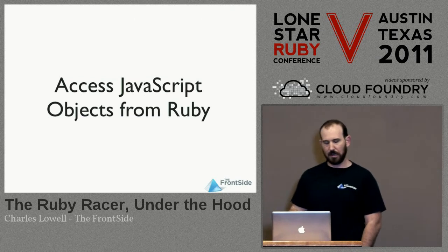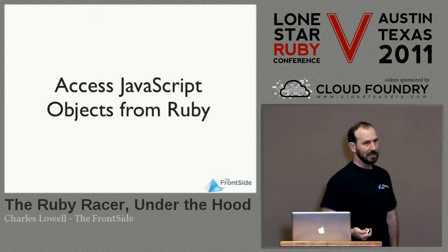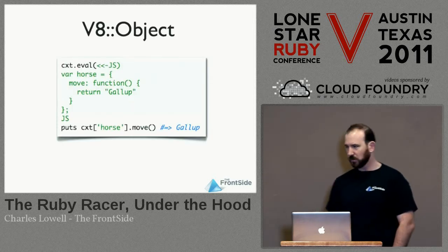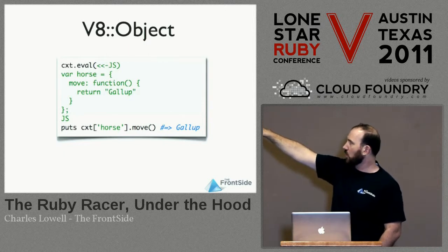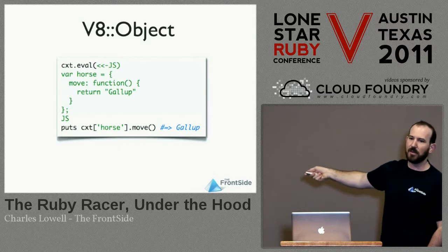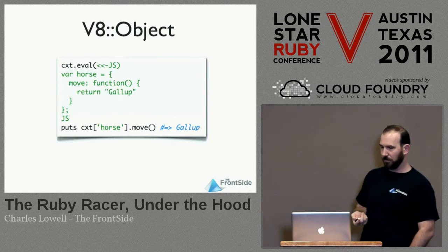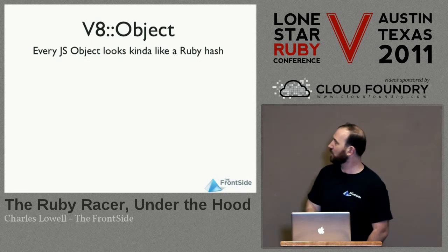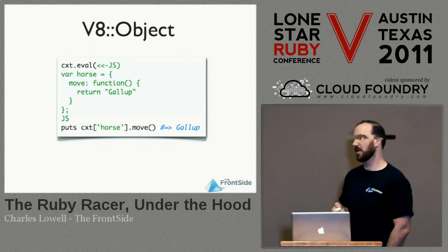You can do more than evaluate JavaScript code — you can actually get references to JavaScript objects directly, and they masquerade as Ruby references. Taking an example from the CoffeeScript homepage, we're going to evaluate an object literal and assign it to the horse variable. You can see that we can pull it out of the context, and from Ruby code we can actually invoke that JavaScript method and get the return value back into Ruby. The first two months of this project was literally just getting that to work — seg faulting and everything — just to be able to get a reference to a JavaScript object and call a method on it.